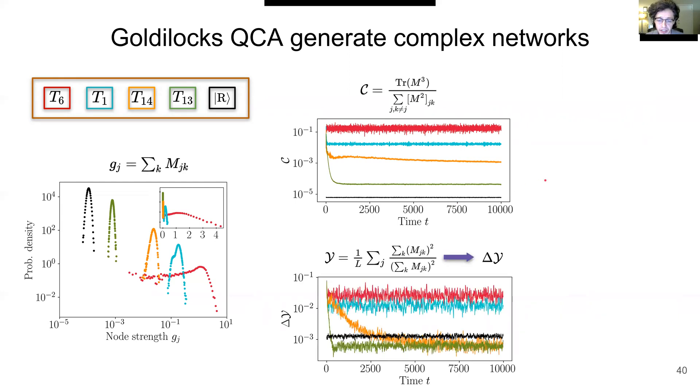For disparity, we compute fluctuations of disparity, which quantifies network reconfigurations. A system with large fluctuations in disparity is undergoing many reconfigurations, first exhibiting a strong backbone, then exhibiting less of a backbone and continually changing that structure. It's the Goldilocks rule T6 which has the highest fluctuations in disparity.